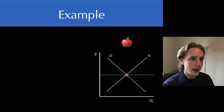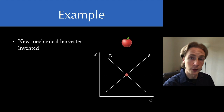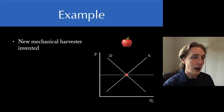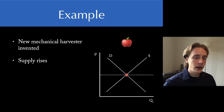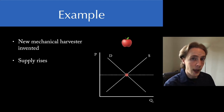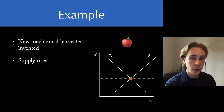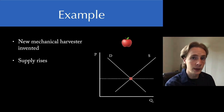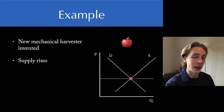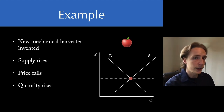Last example: imagine a technology improvement — a new mechanical harvester of apples is invented that allows the harvesting process to go a lot quicker. This increases producers' willingness to sell apples at any given price. At a price of one dollar, producers are willing to sell more apples than before. At five dollars, more than before. So supply is going to increase and consumers are going to react through the price. They look at the lower price and are willing to purchase more apples — not because consumers care about the mechanical harvester, but because the price tells them apples are less scarce. The price falls and the quantity sold of apples rises.